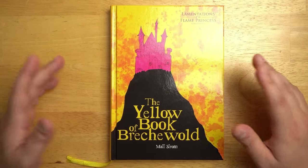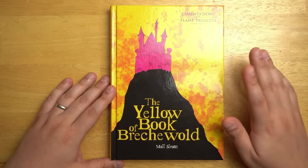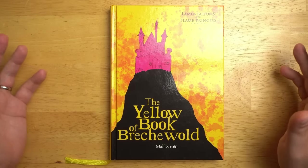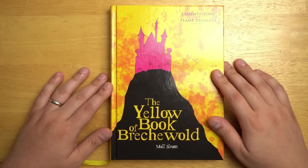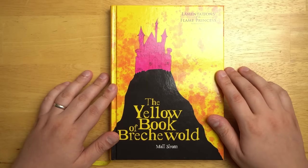So that is the Yellow Book of Breckewald. As usual, I've put links in the description below where you can pick this up for yourself if you are so inclined. And remember that Knave 2nd Edition is available for pre-order over on Backerkit. I will put a link to that as well. Thanks for watching, everybody. I'll see you next time.